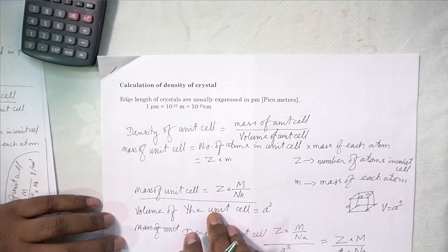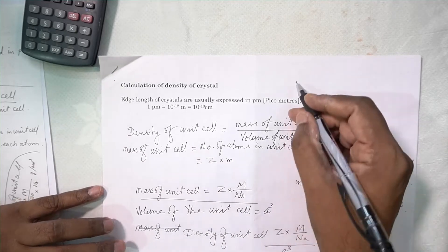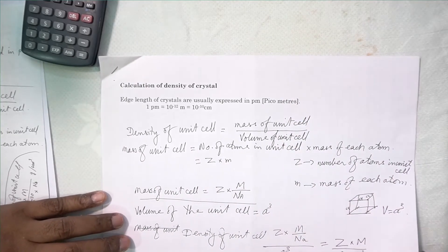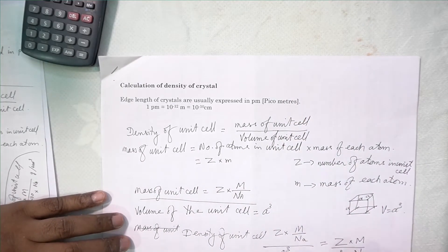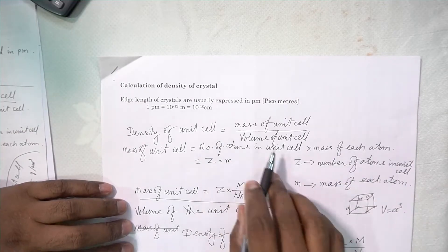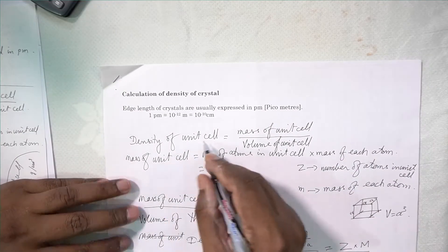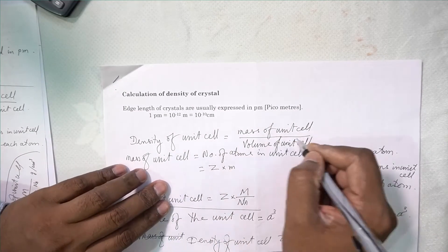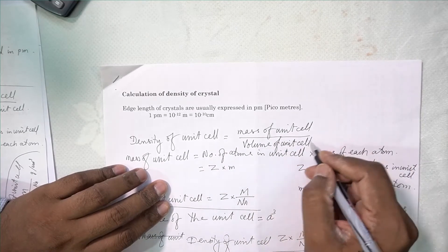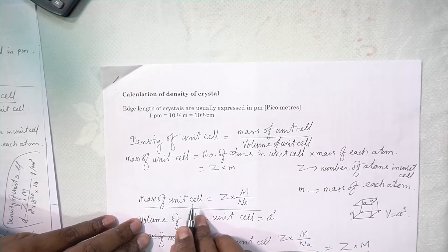Edge length of crystals are usually expressed in picometers. Picometer is 10 to the power minus 12 meters, or in centimeters it is 10 to the power minus 10 centimeters. Density of the unit cell is equal to mass upon volume, or mass of unit cell upon volume of unit cell.